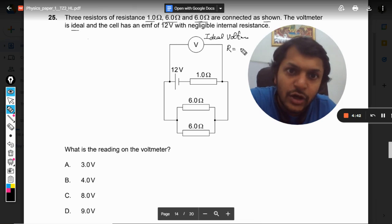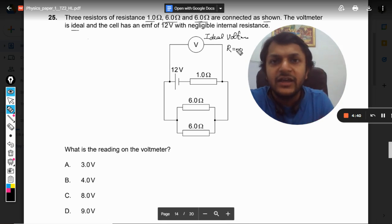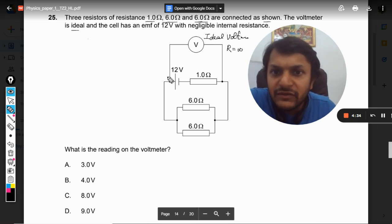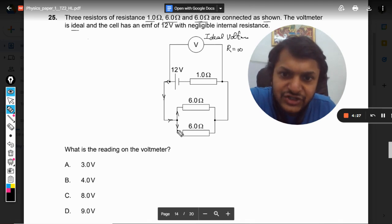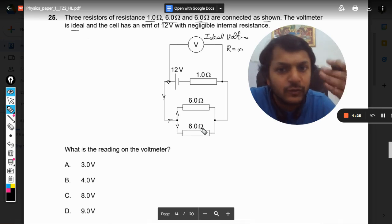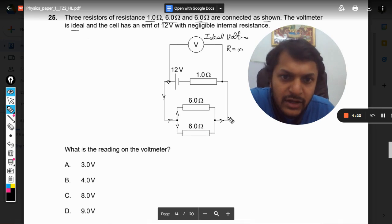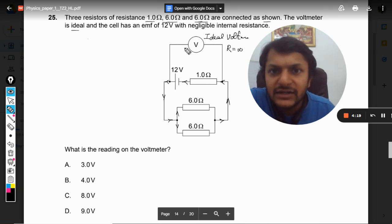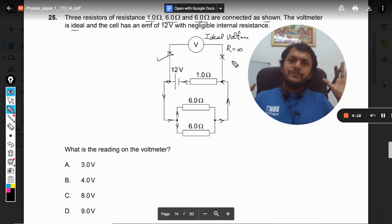Ideal voltmeter means that the resistance of this is infinite and the branch in which this voltmeter is connected, current will become zero. So there will be no current in this branch, so complete current will pass through this. It will go like this and now the current will get shared equally with each other because both of the resistances are the same, and then the current will move like this. But no current will move in this branch.